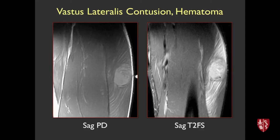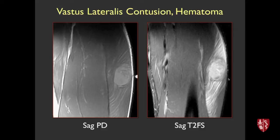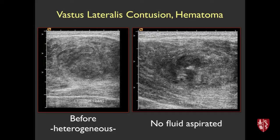Here was the ultrasound on that patient — skin here, quadriceps muscle, femur down in here. Pretty heterogeneous collection; you could probably predict this is not going to be drainable. The patient said 'do whatever you want,' so I put a needle in, tried to inject some lidocaine to loosen it up, but no fluid was obtained — really not a successful procedure. As a quick aside, people have said why not inject TPA into these things? One, I'm not sure that would be effective in this situation. Two, I'm certainly very worried about TPA causing more hemorrhage, especially in a professional athlete. So I have not gone down that road.